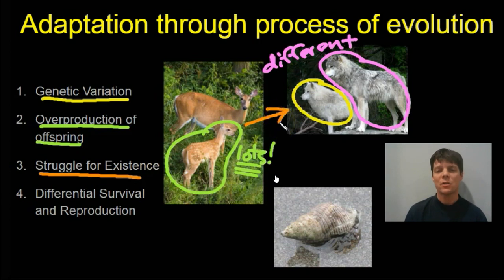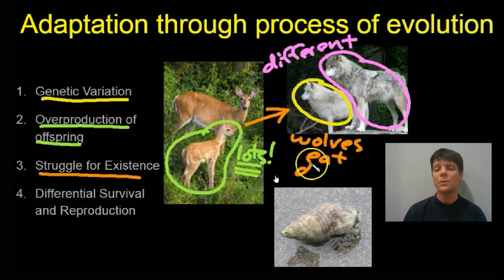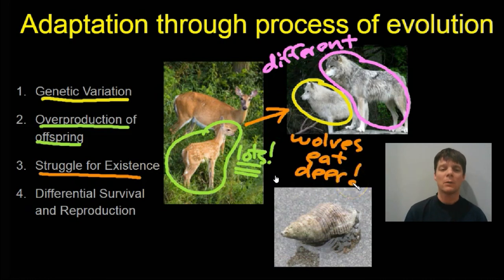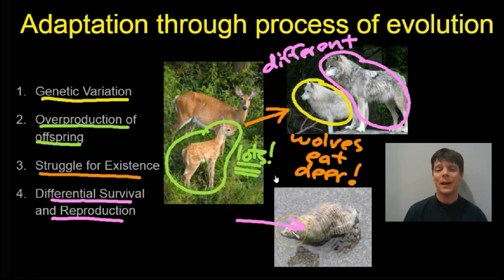Next there's a struggle for existence. For the deer, the struggle is that it lives in the same environment as wolves, and wolves eat deer — because there is a predator-prey relationship. There is a struggle for existence because deer have to avoid being eaten. So deer have evolved many features which allow them to avoid wolves catching them: they run very fast and they have good hearing.